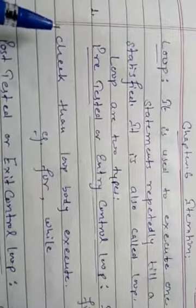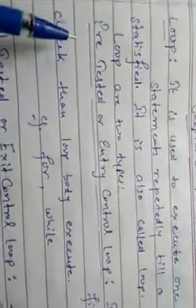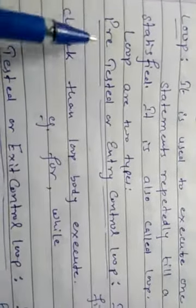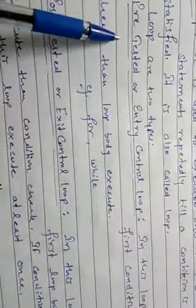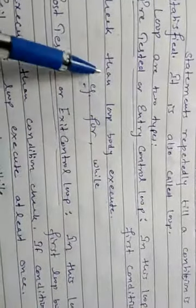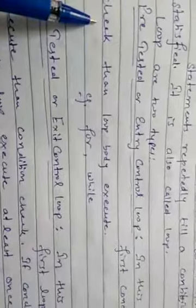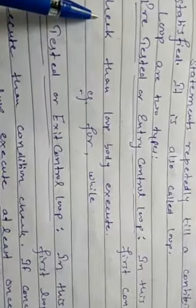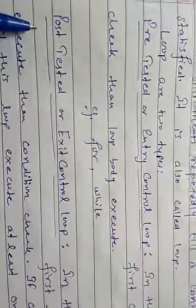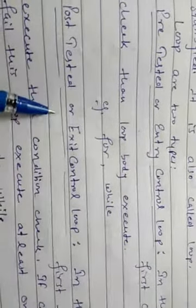Java provides two types of loop. The first is pre-tested, also called an entry control loop. As the name suggests, in this loop the condition is checked first, then the loop body executes. If the condition fails, this loop will not execute. Examples of this are for and while.